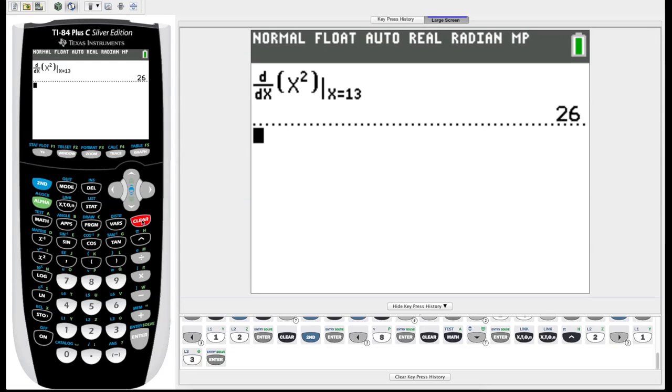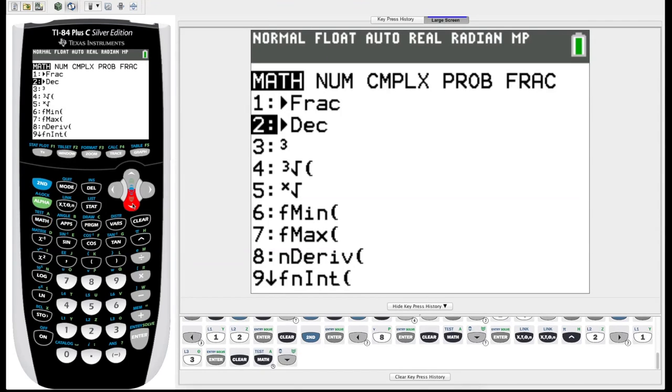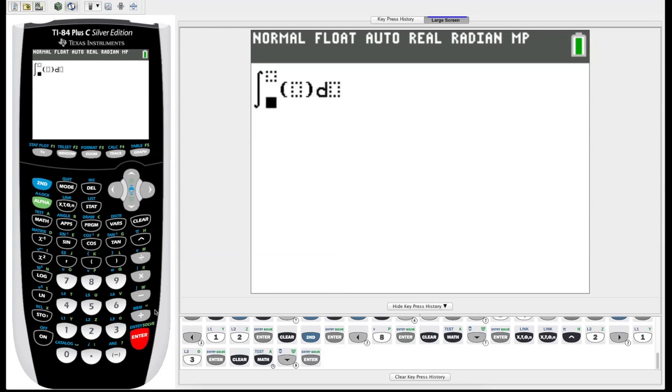Similarly, we can do this for definite integrals. So we go back to our math key, scroll down this time to number 9 where it says fn int. Hit enter. Now again, some blank spaces to fill in. We need to fill in our limits of integration. Let's enter, say, from 3. Hit the right arrow. It goes up to the top one—say 5.